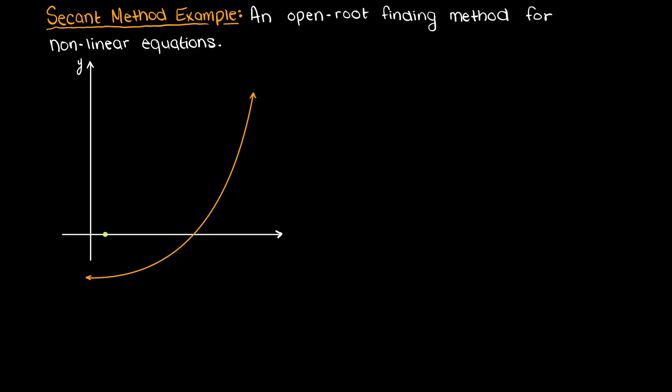As we discussed in the previous video, the secant method is an open root finding method for non-linear functions, meaning that we pick two initial x values and then we iteratively solve for a root from that point.